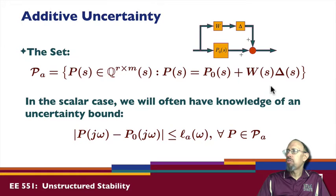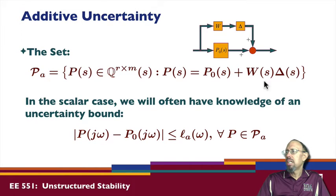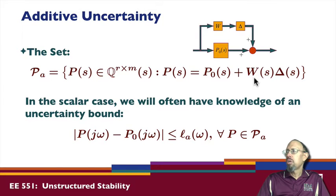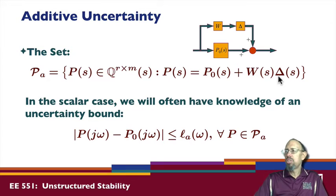For the additive uncertainty set, W is a weighting matrix that weights the uncertainty. We'll come back and see what W is going to be in a little bit. All of this represents the uncertainty, and we're going to find a W that normalizes it — putting it into a standard or normalized form.